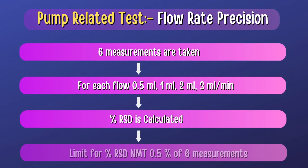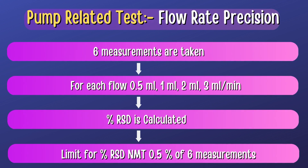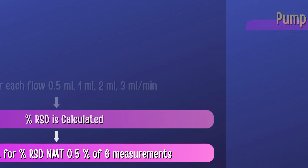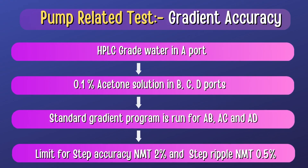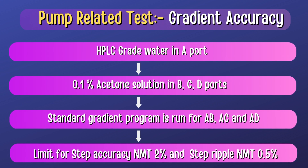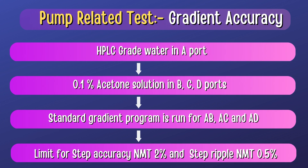For Flowrate Precision, 6 measurements are taken for each flow rate and %RSD is calculated. The limit for %RSD should not be more than 0.5% for 6 measurements. For Gradient Accuracy, HPLC grade water is used in port A and 0.1% Acetone Solution in ports B, C, and D, and a standard gradient program is run for A-B, A-C, and A-D channels. The limit for step accuracy should not be more than 2% and the limit for step ripple should not be more than 0.5%.